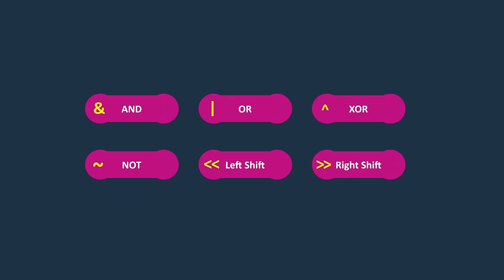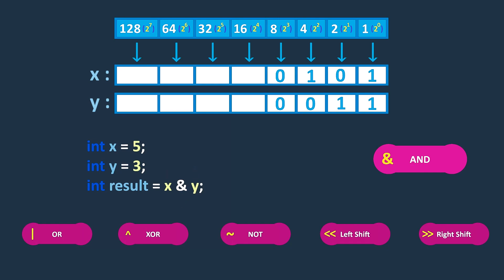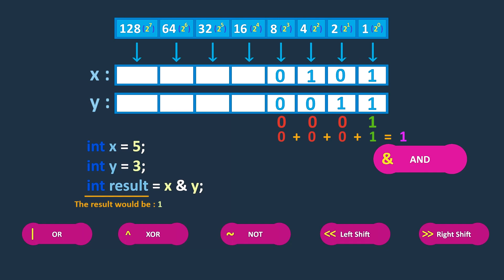Here are the bitwise operators in C#. The AND operator performs a logical AND operation between the corresponding bits of two operands. It returns a value where each bit is set to 1 only if both corresponding bits in the operands are 1, otherwise the bit is set to 0. In this example, the binary representation of the result is 1000, because the first bits are the only bits where both x and y have a 1. All other bits have at least one 0, so they are set to 0. Therefore, the decimal value of the result is 1.